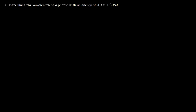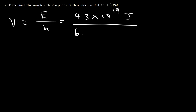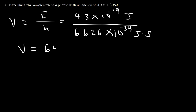This is the last problem: determine the wavelength of a photon with an energy of 4.3 times 10 to the negative 19 joules. We'll calculate the frequency first, then use it to find the wavelength. The frequency is the energy divided by Planck's constant: 4.3 times 10 to the negative 19 joules divided by 6.626 times 10 to the minus 34. The frequency comes out to 6.49 times 10 to the 14 Hertz.